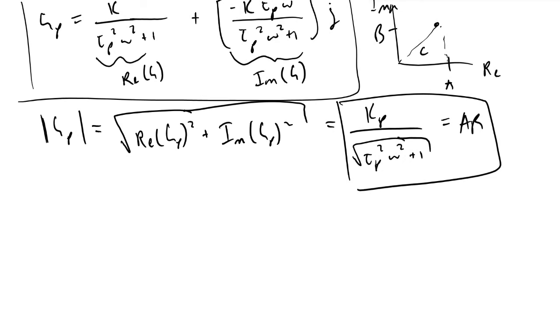In addition to that, we can calculate what our phase angle, I call it pa, which is equal to phi. That is equal to the inverse tangent of the imaginary part of g over the real part of g. So if we evaluate what that is, we'll get tan inverse of minus omega times tau p.